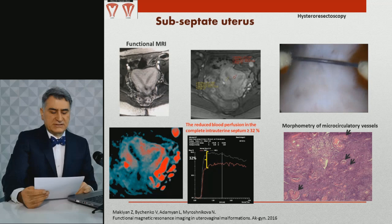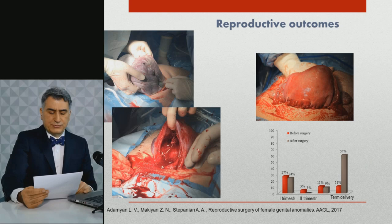The incomplete reduction of the intermedial septum during subsequent stages results in a subseptate or incomplete uterus. Functional MRI revealed the uterus enhances gradually and demonstrates a hyper-signal. Microcirculation is reduced in the septum up to 32%, explaining the higher risk of pregnancy losses in 97% of cases. Reconstructive surgical correction combined with assisted reproductive methods and IVF appeared to improve reproductive outcomes in 57% of cases.